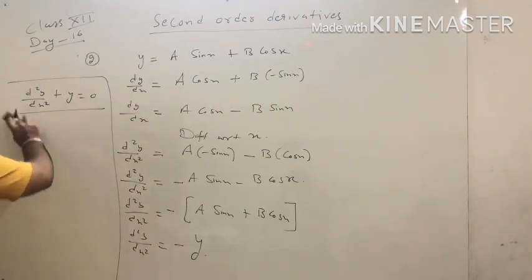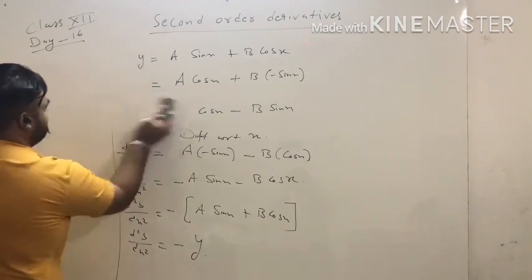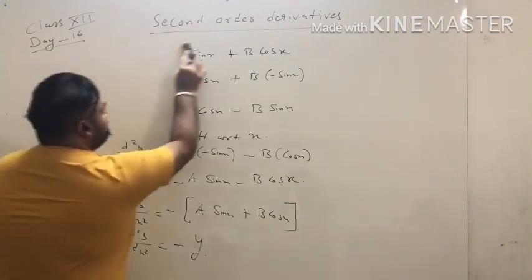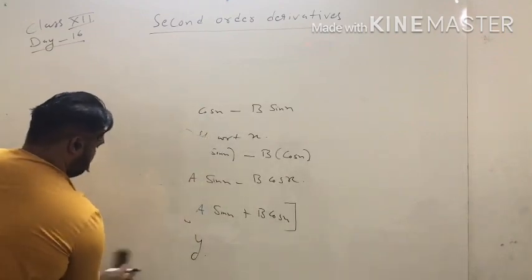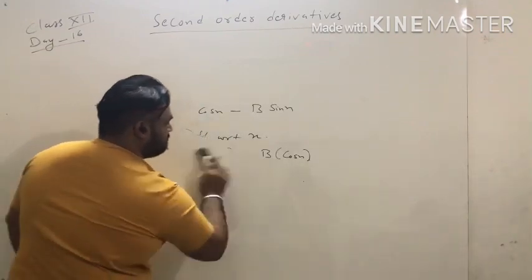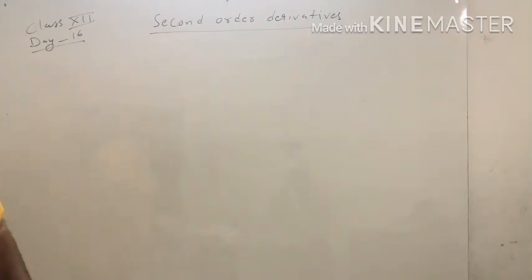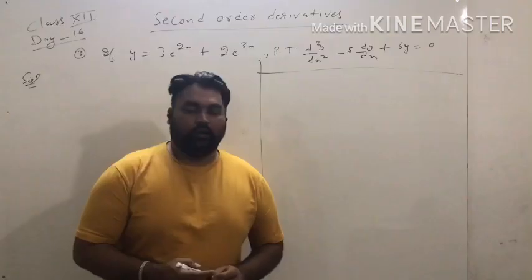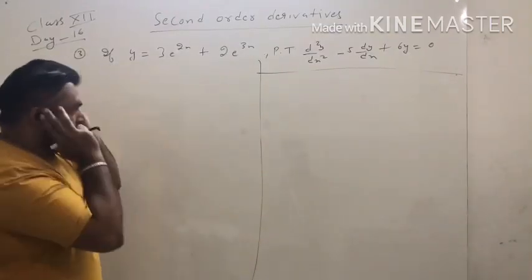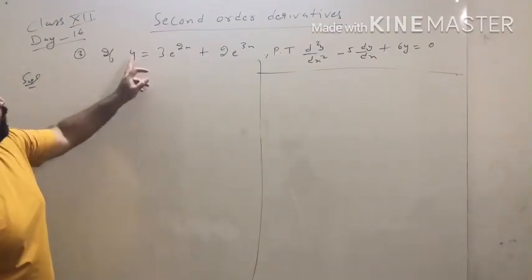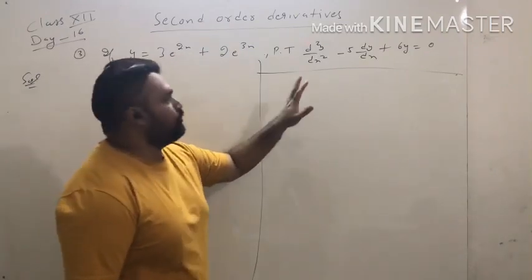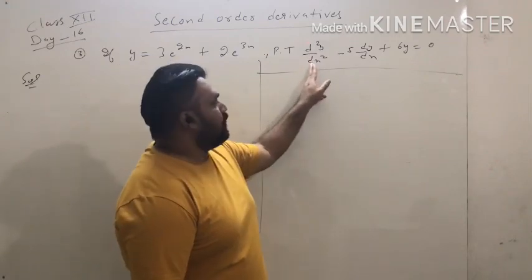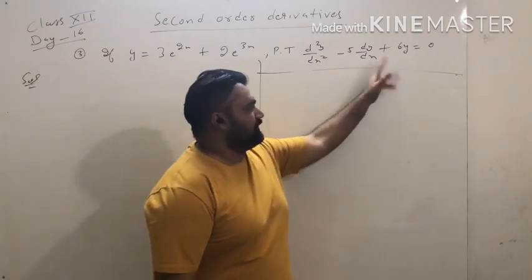Now shift to the third question. Question number three: y equals 3e^(2x) plus 2e^(3x). We have to prove that d²y/dx² minus 5(dy/dx) plus 6y equals 0.